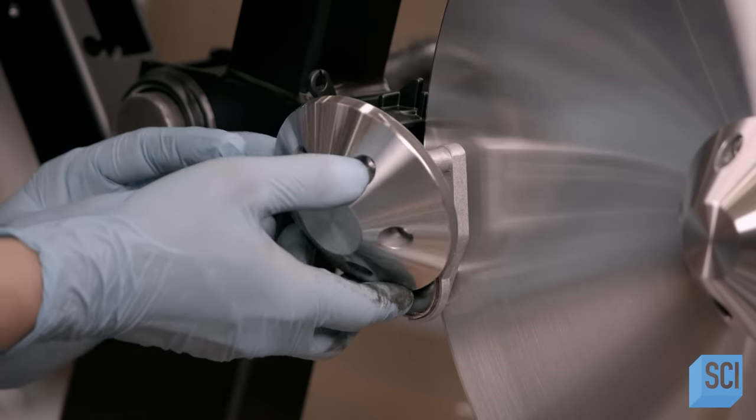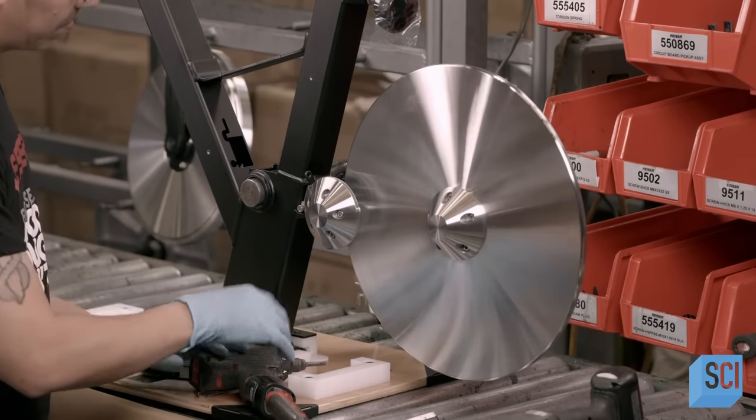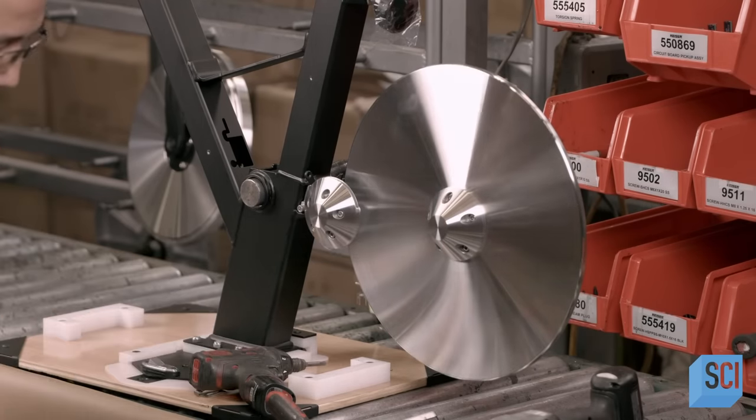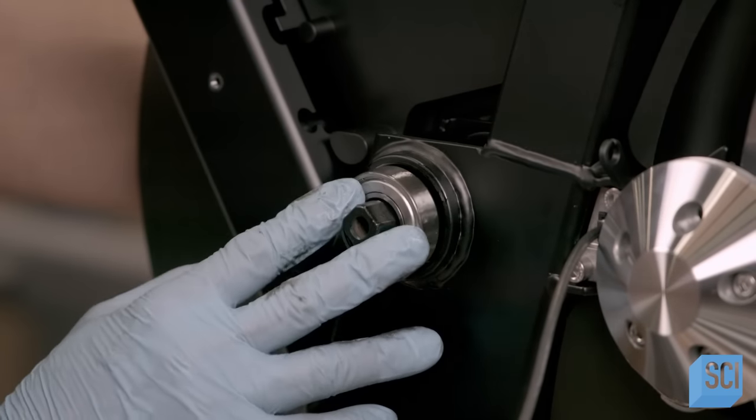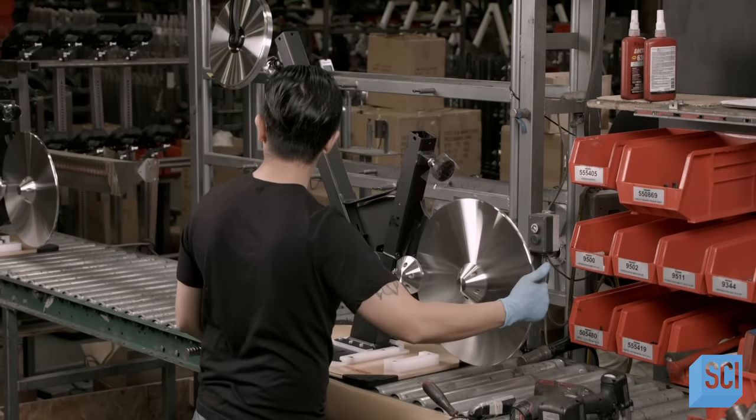The torsion spring equipped cover completes the stationary bike's tension system. He assembles the crank arm and axle to the bike and installs a bearing. Then the bike moves on to the next station.